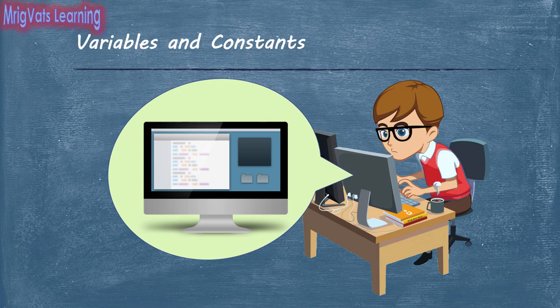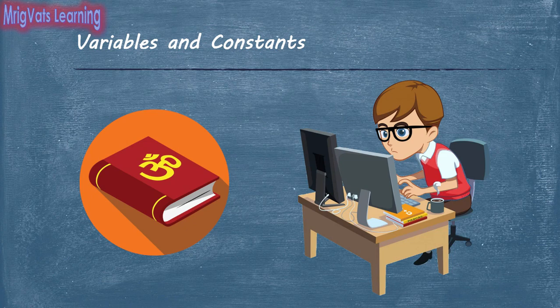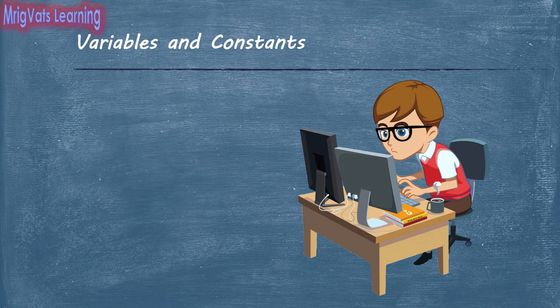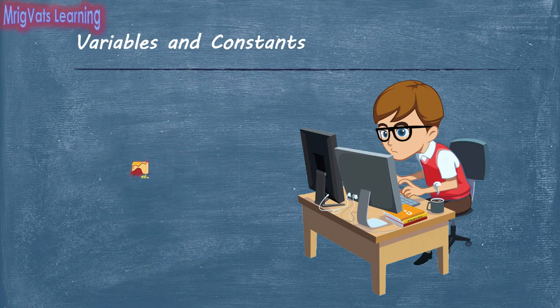What about the price? Do you think price is a constant value? Well, the answer can either be yes or no. If the price of an item is expected to change only once in a while, such as the price of a book that changes occasionally, then you can use it as a constant. However, if the price changes frequently, such as the price of a share that might change every minute, then you must use it as a variable.